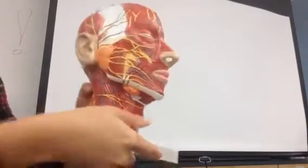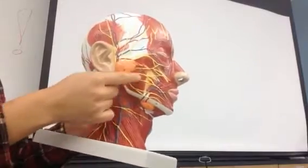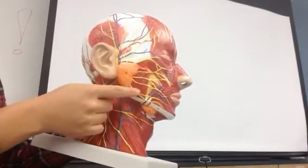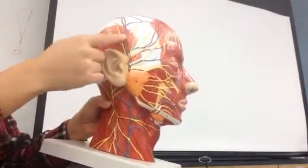The masseter is the one on the jaw right here. And the temporalis is this one up here.